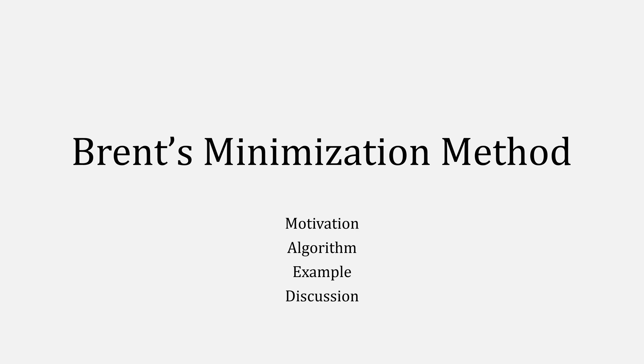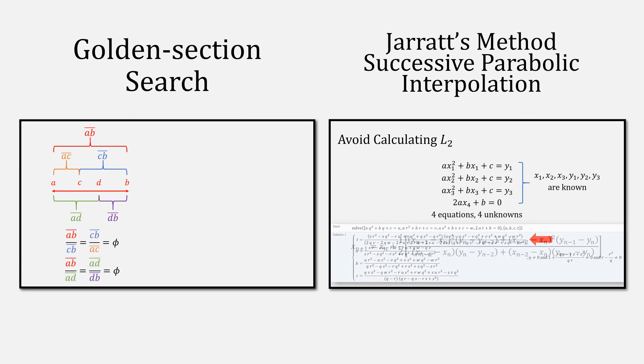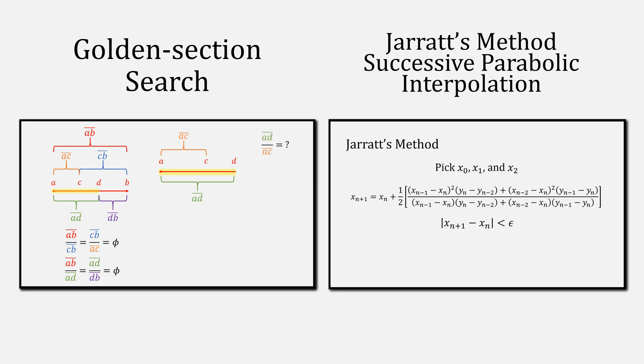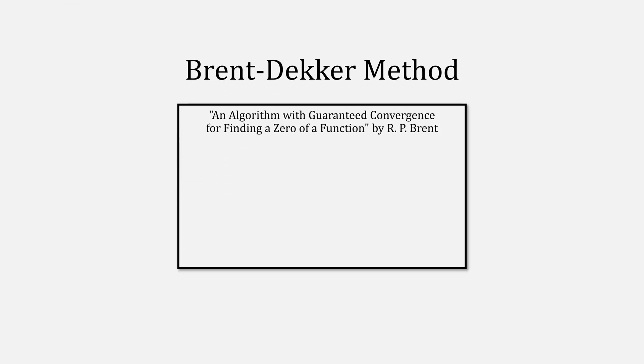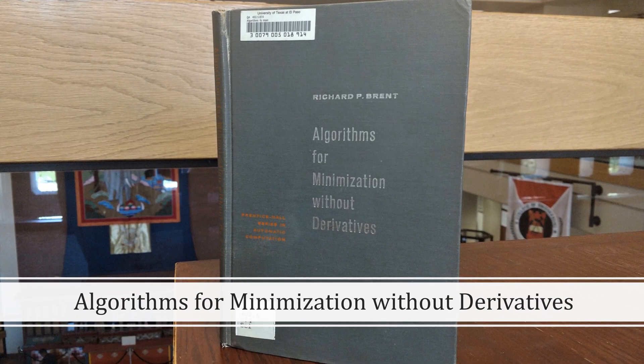I'll be going over the algorithm, trying to visualize as much as I can, and providing some discussion. This video will assume that you're familiar with golden section search, as well as successive parabolic interpolation. Check out my videos if you haven't already. I would also recommend checking my video on Brent's method, I mean the other Brent's method.